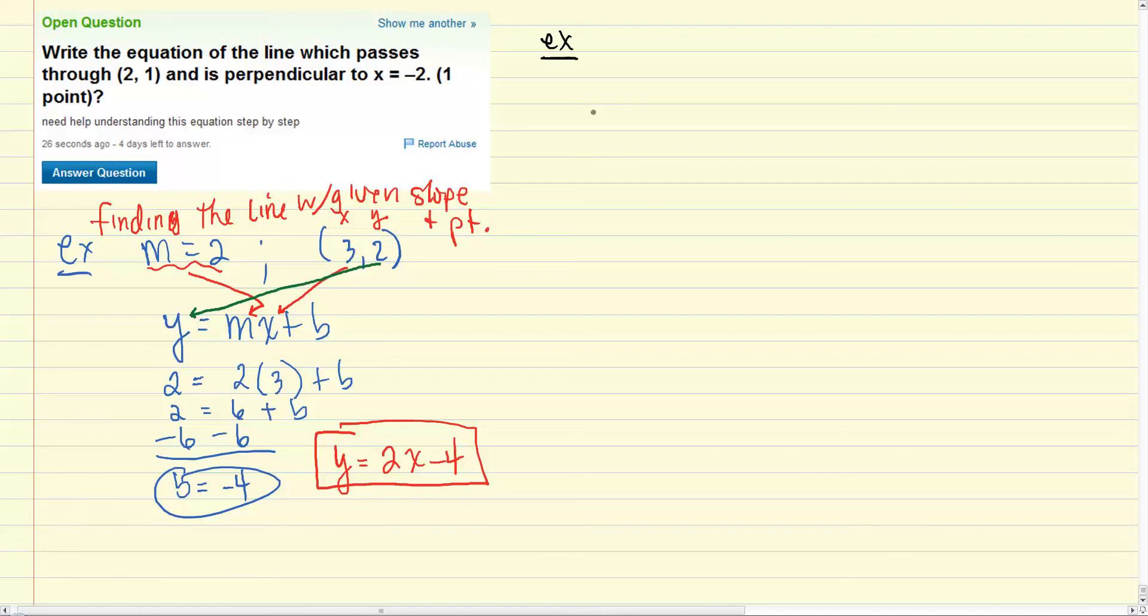The second thing we need to be able to do is be able to find slopes of perpendicular lines. And this is really easy because the slope of a perpendicular line is always just the negative reciprocal of the slope.